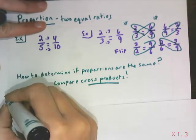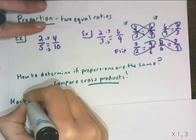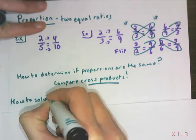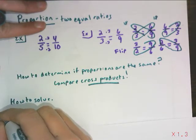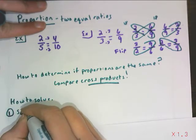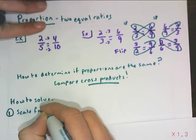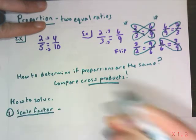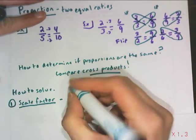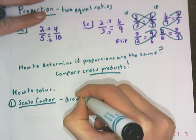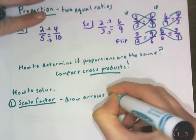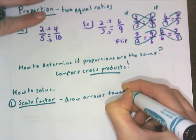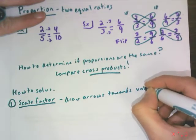Alright, so let's talk about how to solve proportions. We're going to have two methods. The first method is called the scale factor method, and with this you're going to want to draw some arrows in the direction of the thing that you're trying to solve. Draw arrows towards your unknown because that is part of your work.